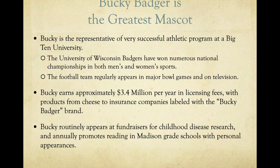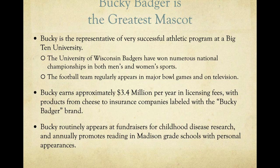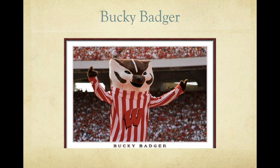We might also point out that Bucky routinely appears at fundraisers for childhood disease research and annually promotes reading in Madison grade schools with personal appearances — again citing evidence, perhaps a newspaper story or imagery from the university Facebook page showing Bucky at a local charity event. You're citing evidence to show that the claim you're making about your value object meeting those criteria is sensible and reasonable to your audience — you want to prove that your value object meets or exceeds the criteria. That wraps up the discussion of the value argument brief. If you have any questions, refer to the written assignment instructions or post questions on the discussion board.